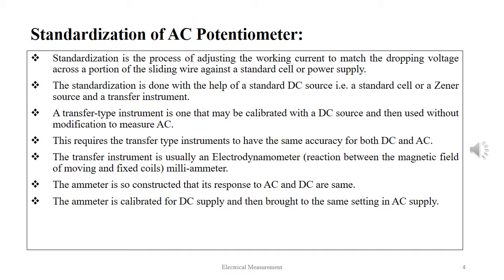This requires the transfer type instruments to have the same accuracy for both DC and AC. The transfer instrument is usually an electrodynamometer. The ammeter is so constructed that its response to AC and DC are same. The ammeter is calibrated for DC supply and then brought to the same setting in AC supply.